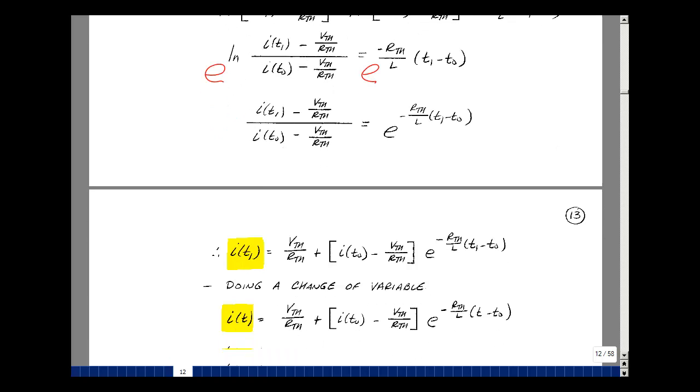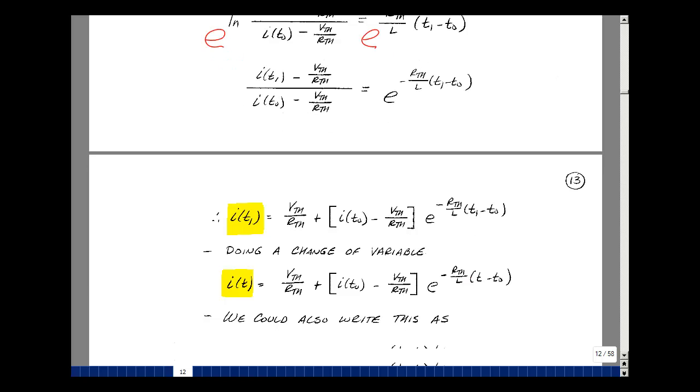Now let's solve for I(T1). Let's bring this on the other side of the equation by cross-multiplying, and then bring this over on the other side of the equation. I could do a change of variable, get rid of T1, and just call it T in general. So this is the form of our solution of I(t).